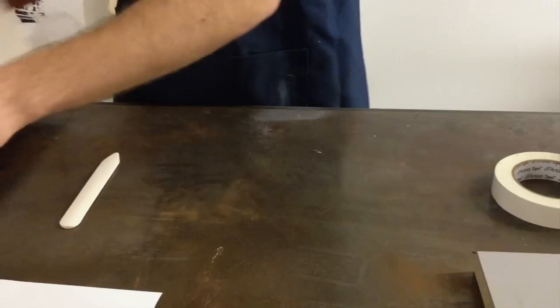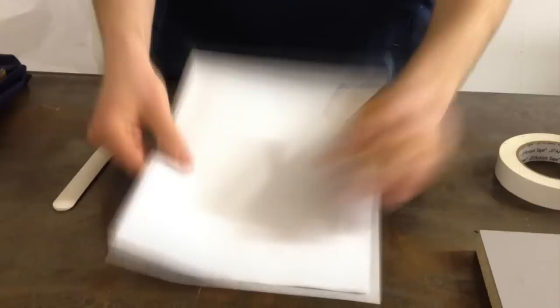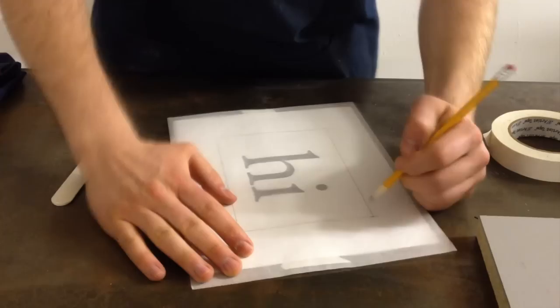So first thing that I'll do, I'll take a piece of tracing paper and I'll tape it to my artwork. Now, I'll go in and I'll just mark the corners so that I have those for reference.